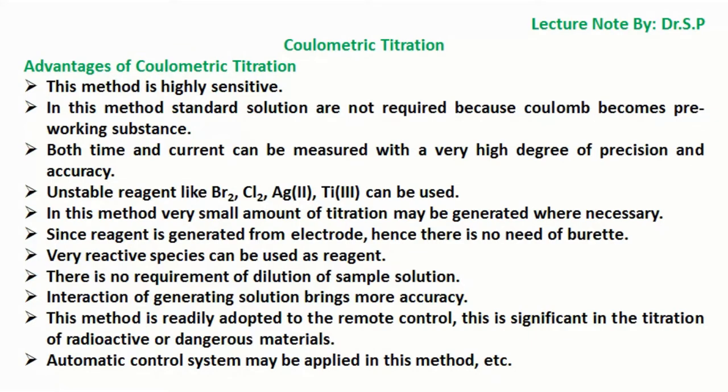Advantages of coulometric titration: This method is highly sensitive. Standard solutions are not required because coulomb becomes the pre-working substance. Both time and current can be measured with a very high degree of precision and accuracy. Unstable reagents like Br₂, Cl₂, Ag(II), and Ti(III) can be used.